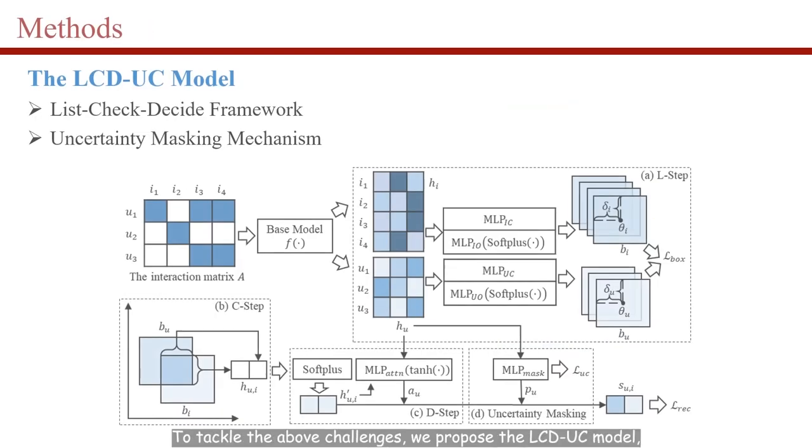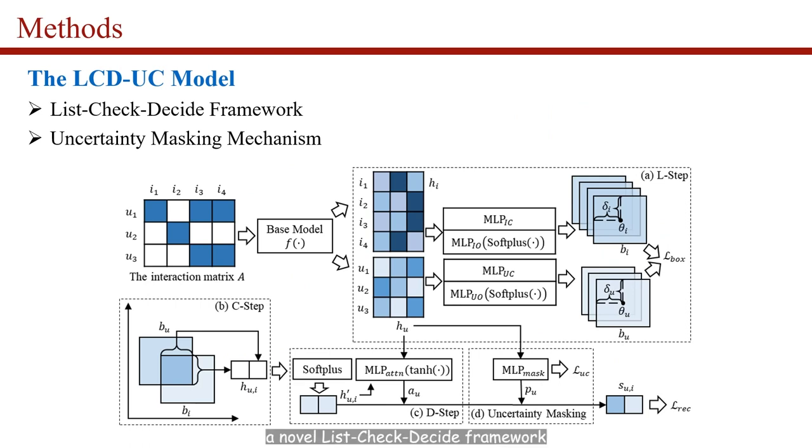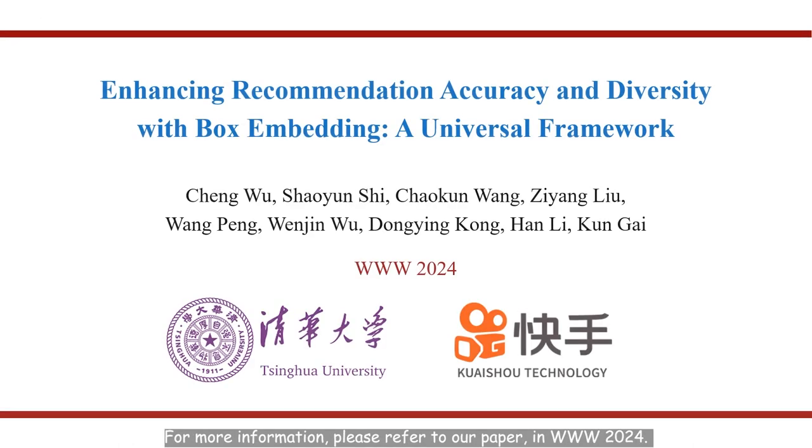To tackle the above challenges, we propose the LCD-UC model, a novel list-check-decide framework with the uncertainty masking mechanism based on box embedding. For more information, please refer to our paper in the Web Conference 2024.